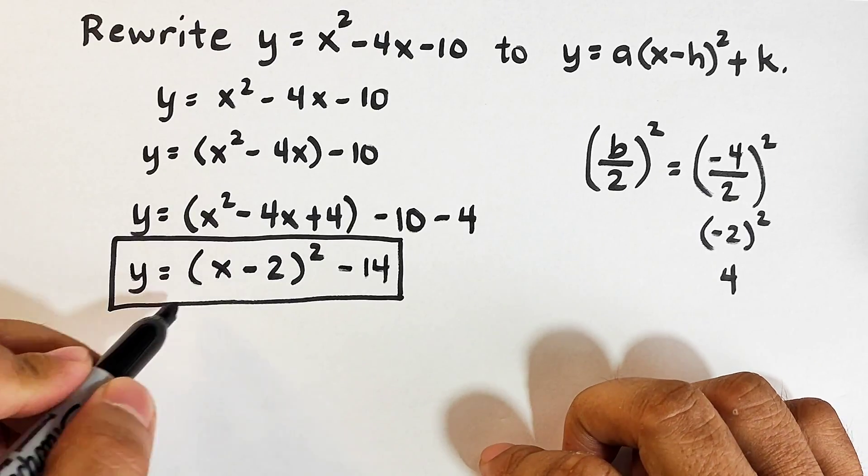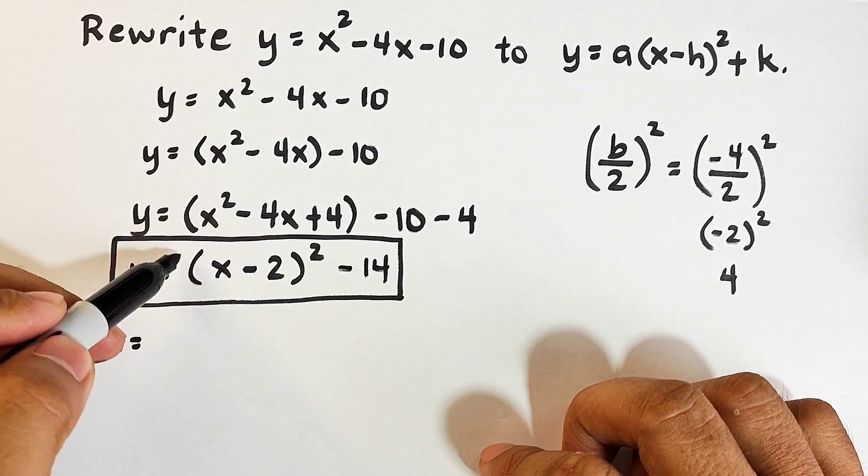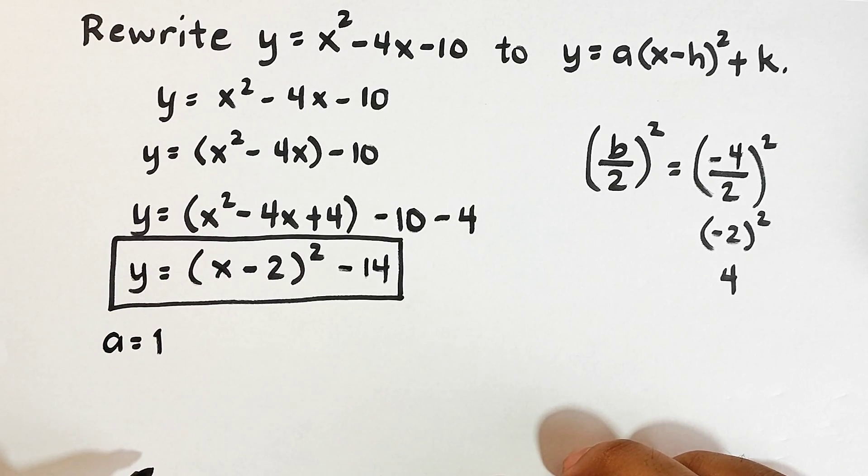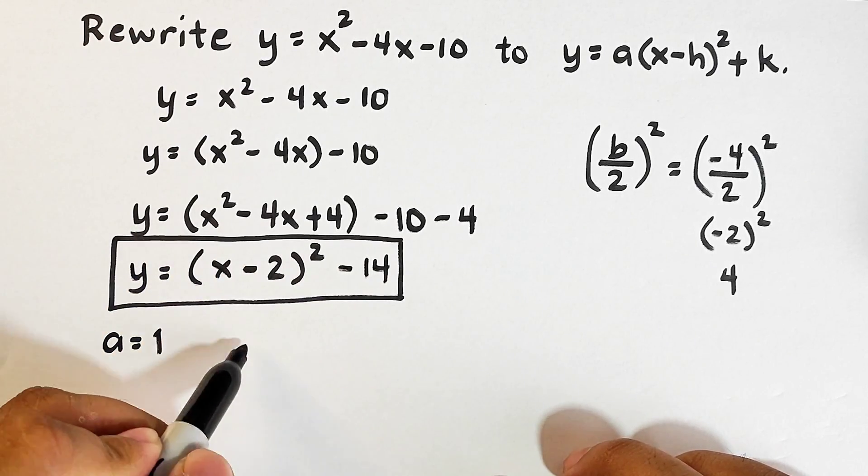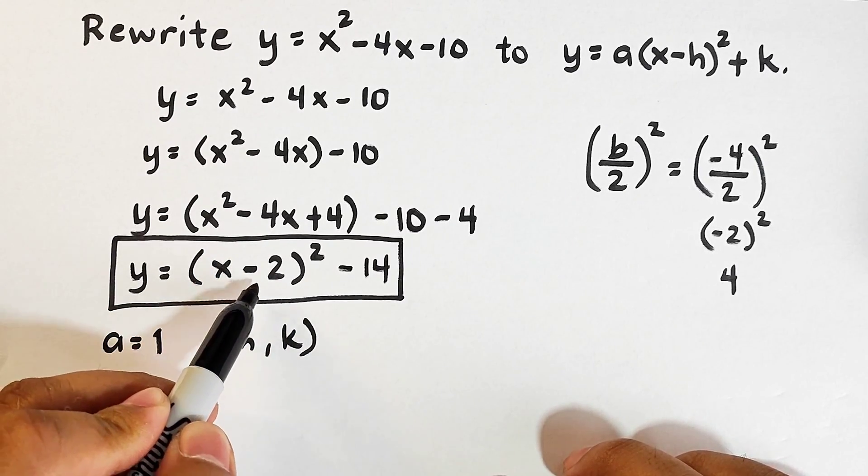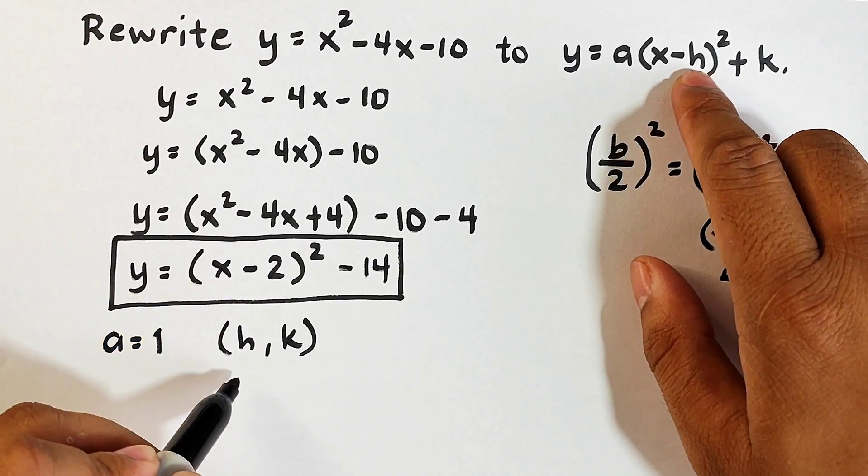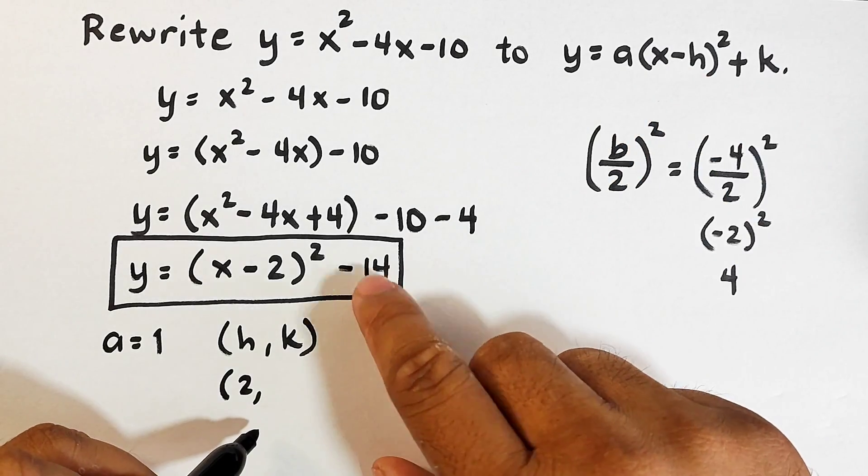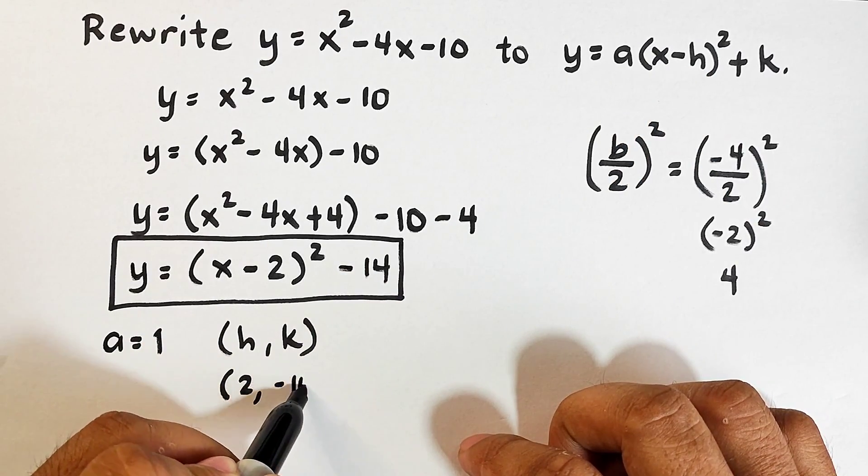Here, yung ating A, nandito siya sa labas, invisible, that is 1. Yung ating namang H and K, yung H and K natin, those serves as the vertex, or the coordinates of the vertex. Yung pinakatip ng parabola. So dito, ang H natin, di ba, H and K, H, K. Kunin mo lang yung additive inverse na ito. If this is negative 2 squared H, that would be positive 2. And as for the K, kunin nakita yung number dito, as is na yan, which is negative 14.